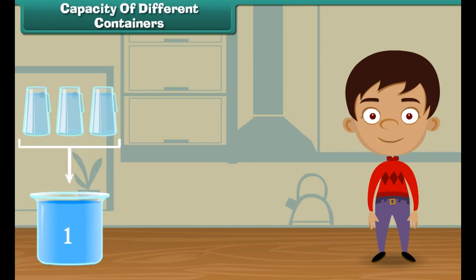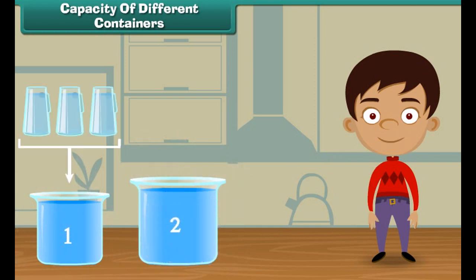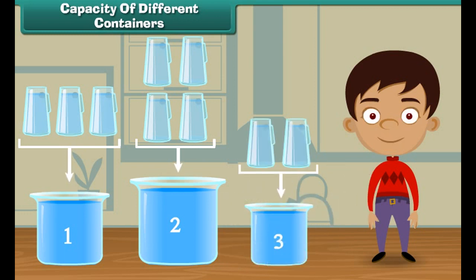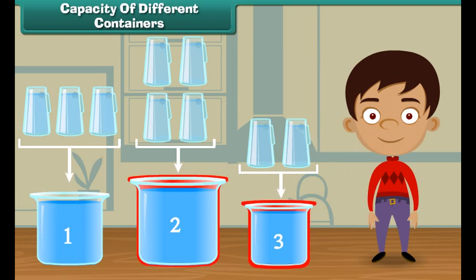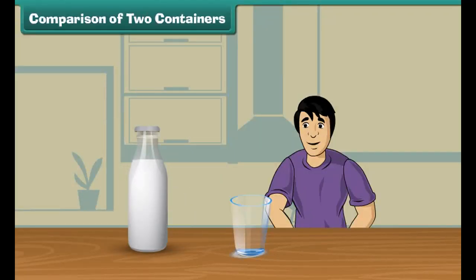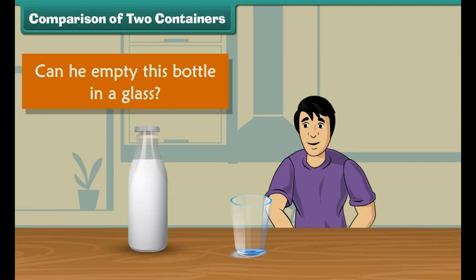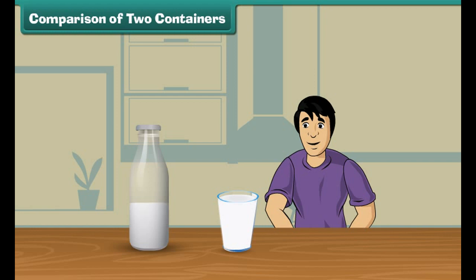Now let us fill the third vessel: one and two. Two jugs of water fill the third vessel. Friends, we have seen that vessel one is filled with three jugs of water, vessel two is filled with four jugs of water, and vessel three is filled with two jugs of water. It means vessel three holds the least water, and vessel two holds the most water.